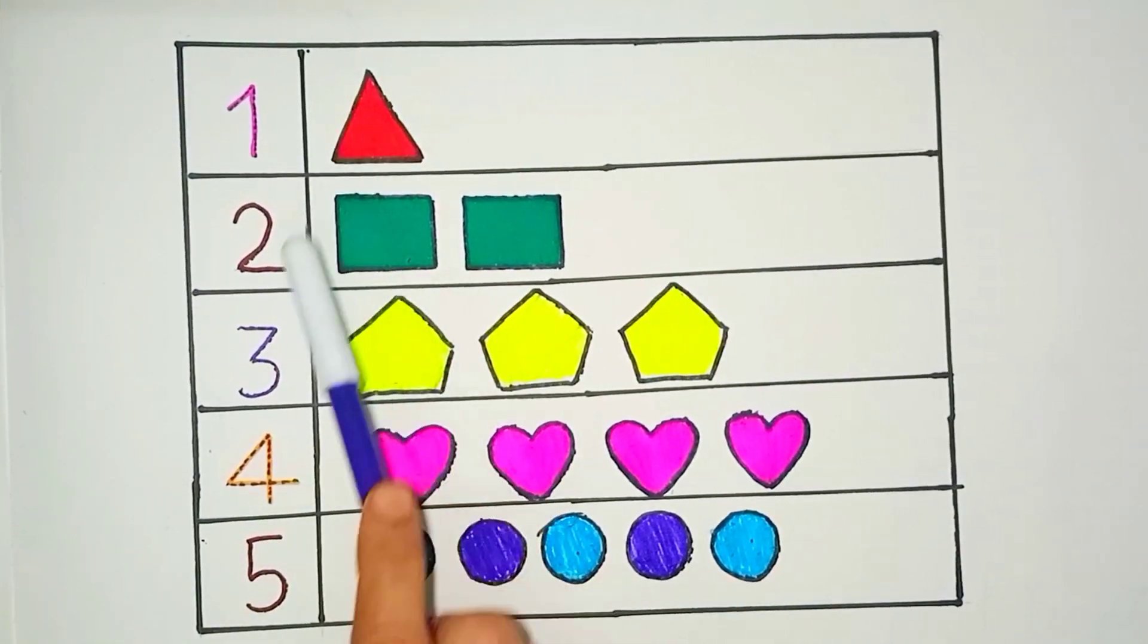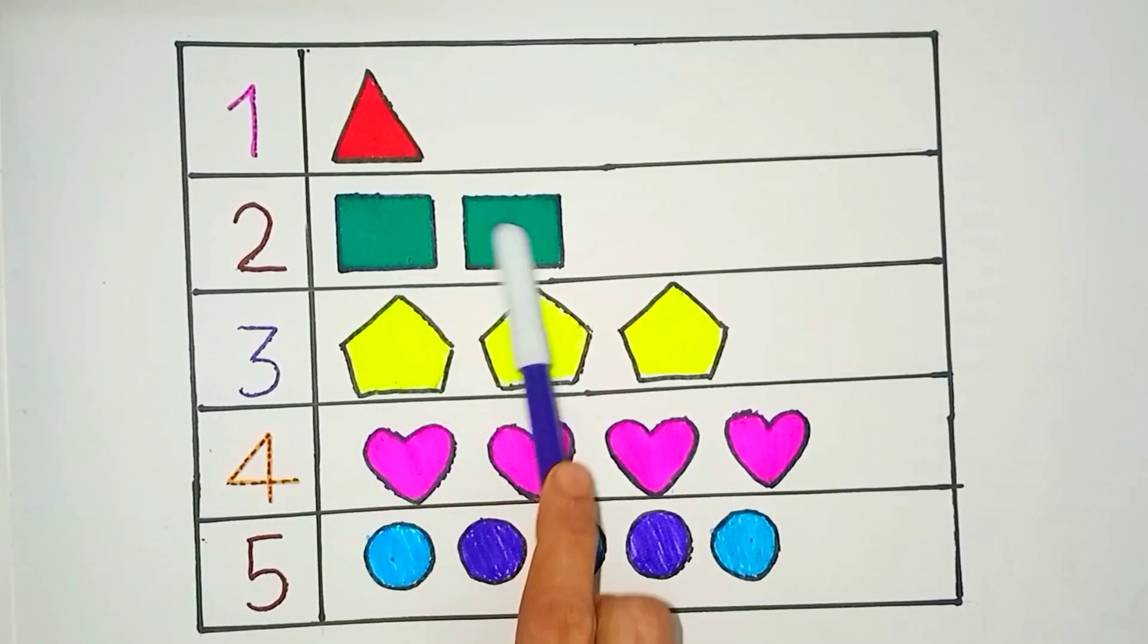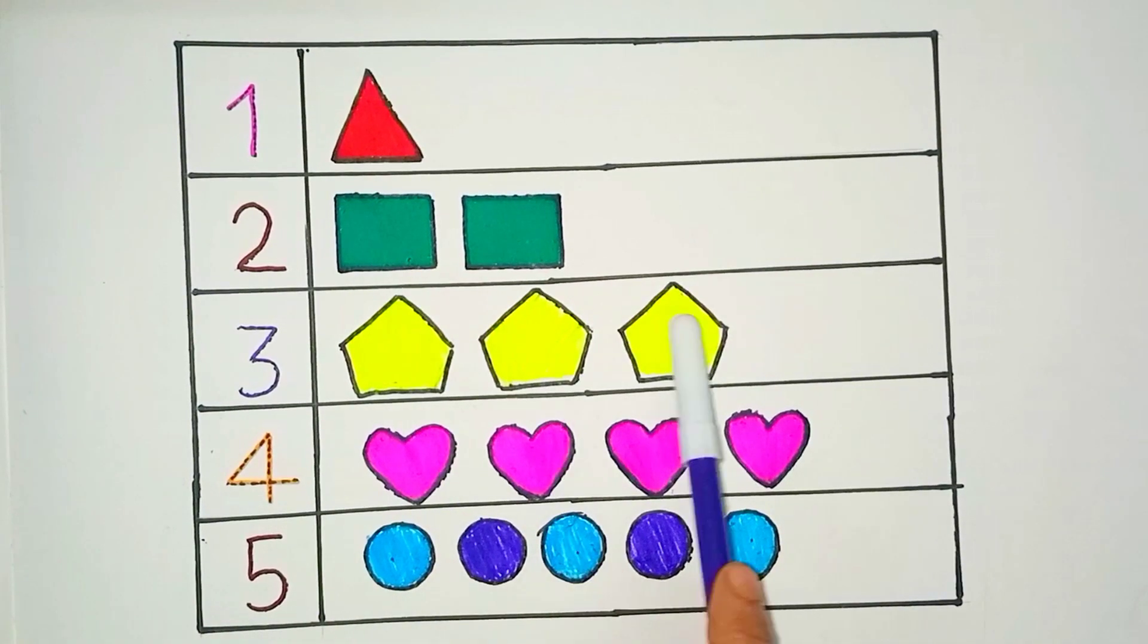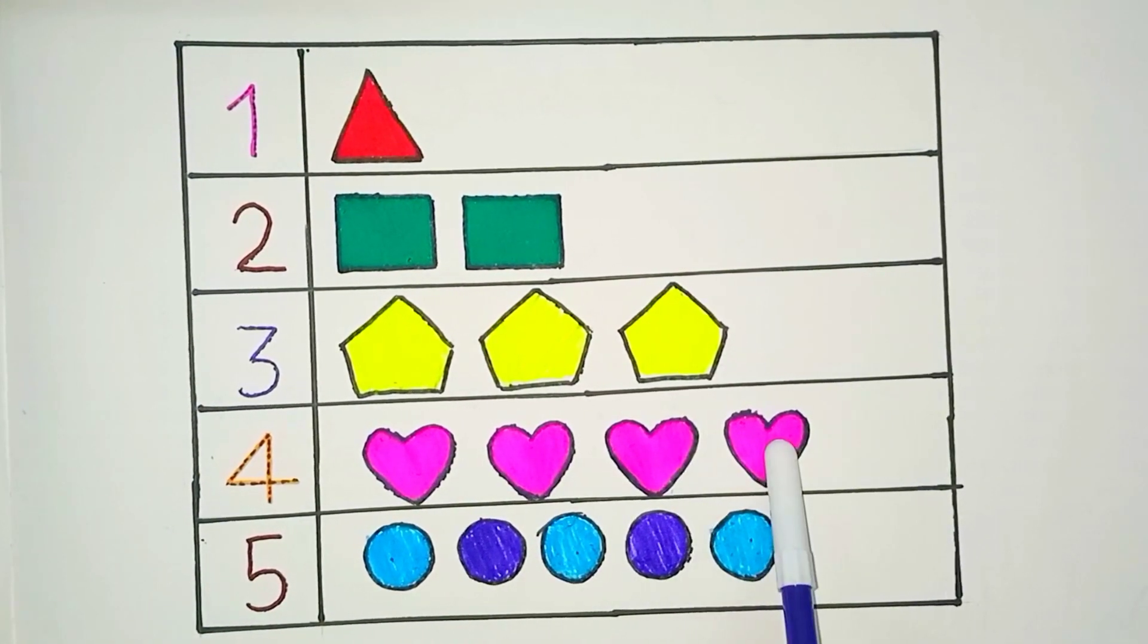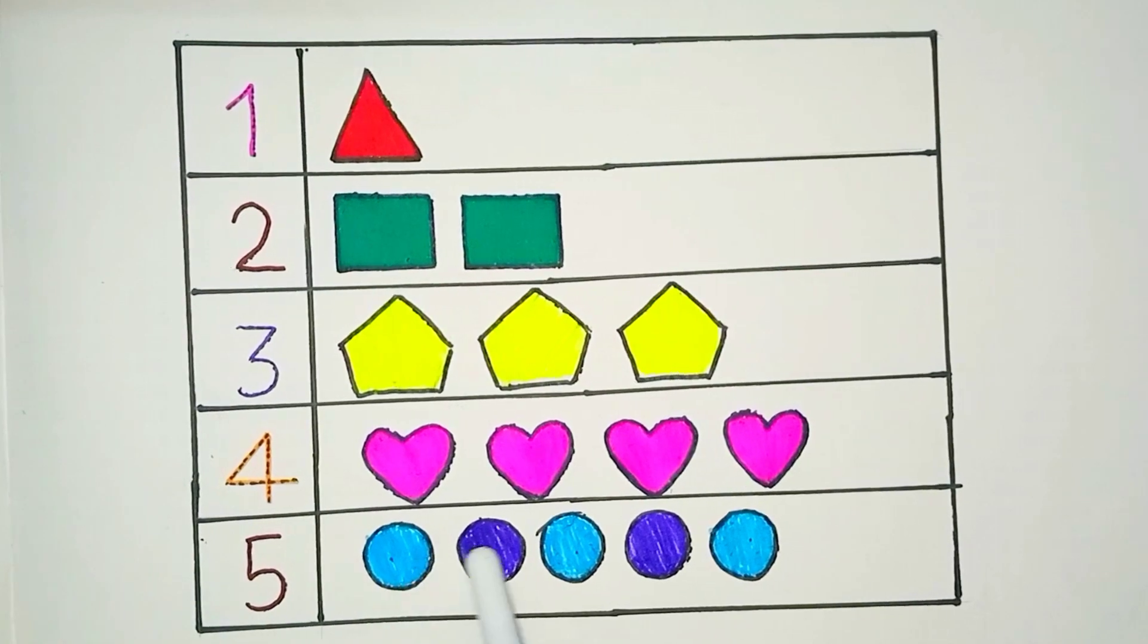One, one triangle. Two, two square. Three, three pentagon. Four, four hearts. Five, five circles.